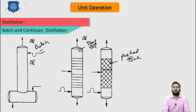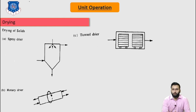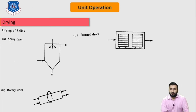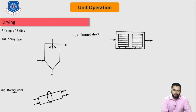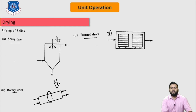Now let's discuss the drying process, in which we remove moisture. Spray dryers, rotary dryers, and tunnel dryers are used. This is the symbol for the spray dryer, this is the symbol for the rotary dryer, and this is the symbol for the tunnel dryer.